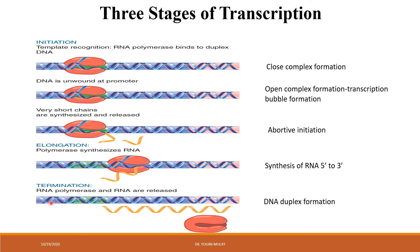Once RNA polymerase dissociates from the DNA, duplex formation takes place — the single-stranded DNA reforms hydrogen bonds with its original partner. Overall, transcription takes place in three steps: initiation (closed complex formation, then open complex formation and transcription bubble, then abortive or true initiation), followed by elongation, and finally termination. Thank you.